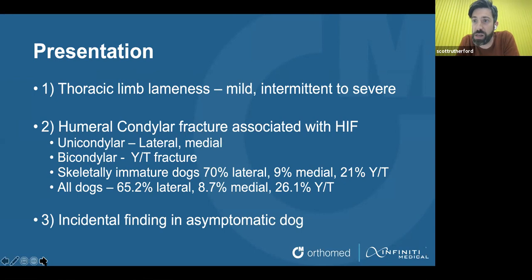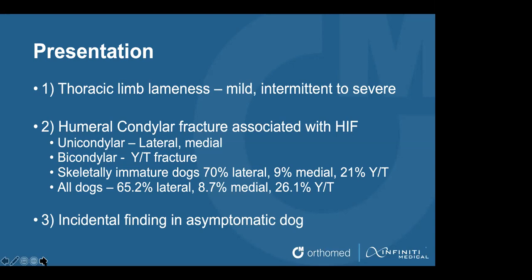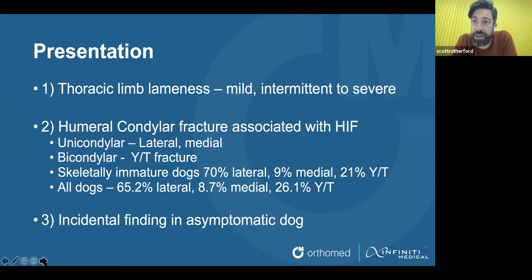This seems to be the general numbers, and looking through my own case log, that certainly reflects what I deal with. The third group is an incidental finding — dogs that had an investigation for lameness or CT because of a fracture on one limb, and a fissure is found in a limb the dog is not lame on. We'll come on to discuss that in more detail later.